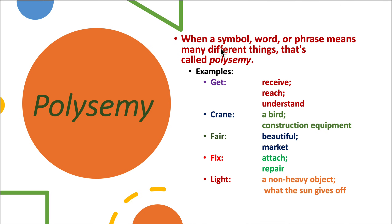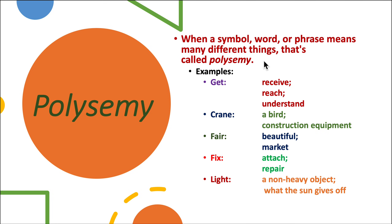Polysemy: when a symbol, word, or phrase means many different things, that is called polysemy. The word is one, but the meaning is different. For example, crane — it's a bird, but crane is also construction equipment. Fair — it means beautiful, but fair also refers to a market. Fix — it means attach, but fix also means repair. Light — it refers to a non-heavy object, but light also refers to what the sun gives off. The word is the same but has many different meanings, and that is called polysemy.